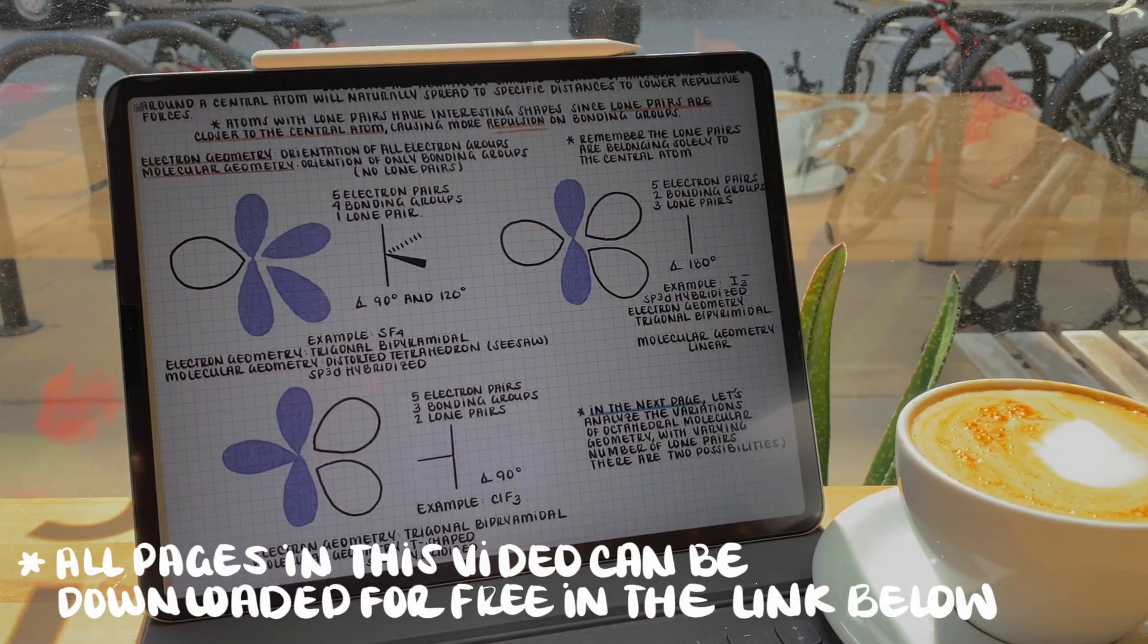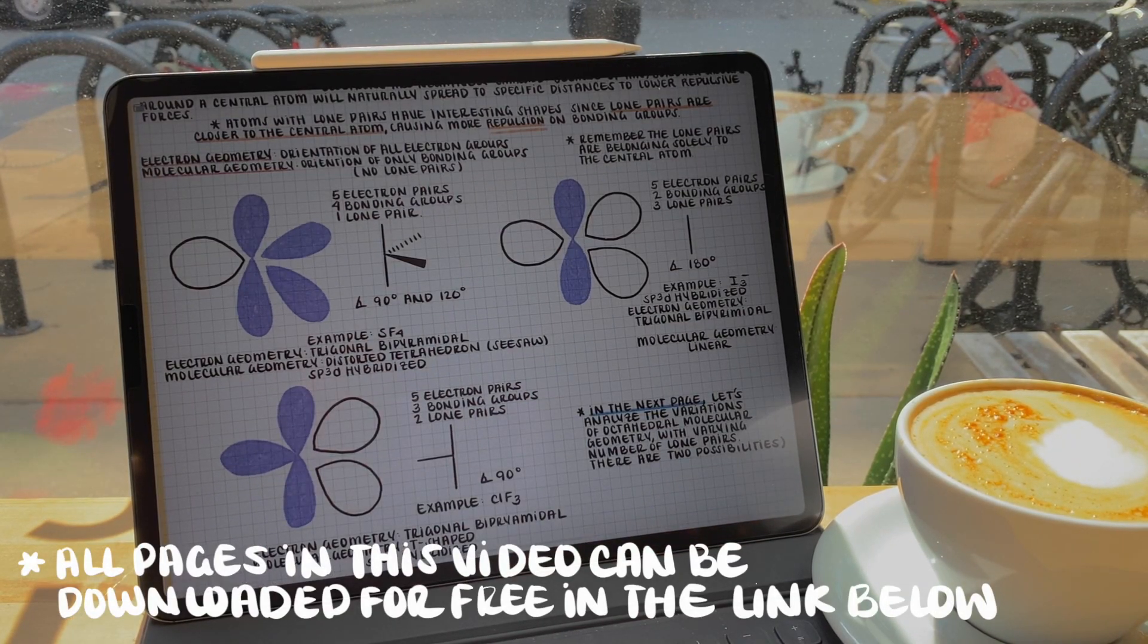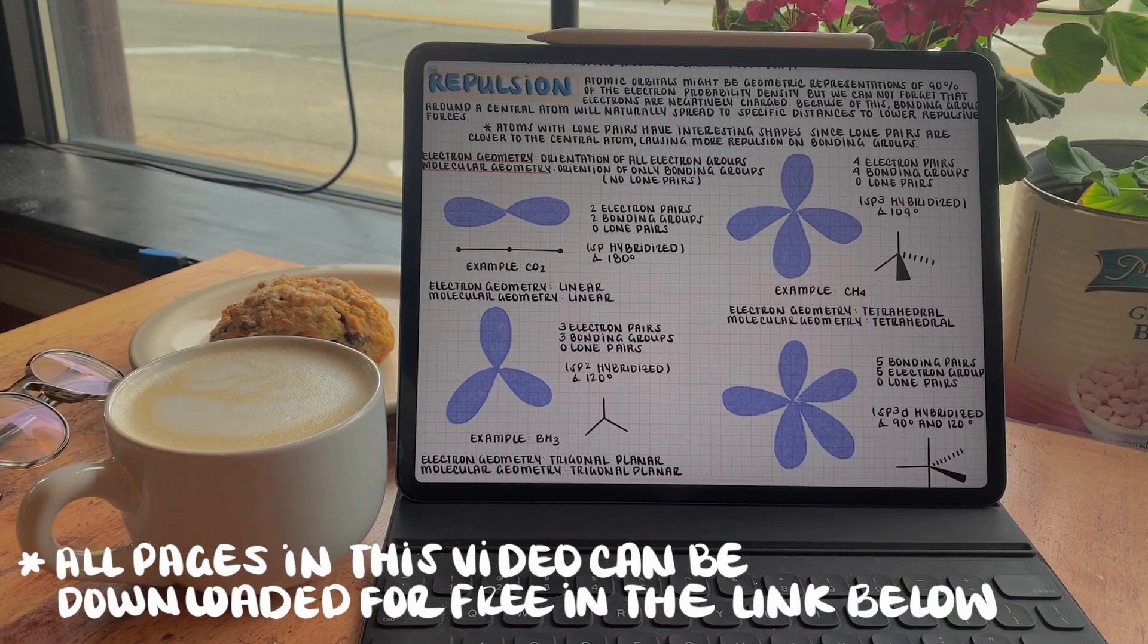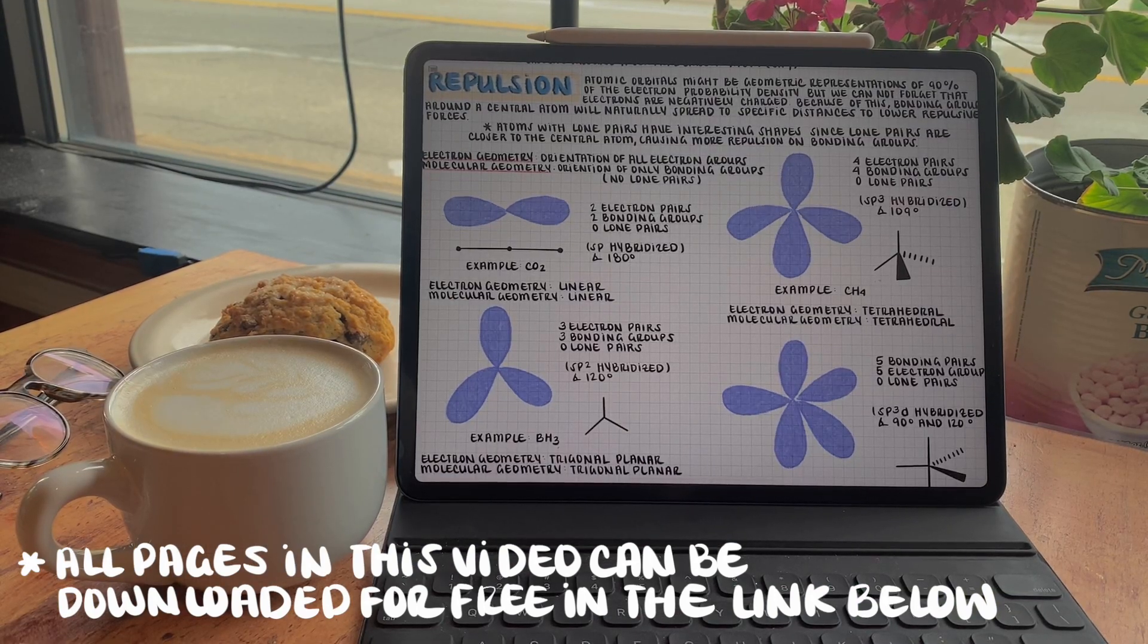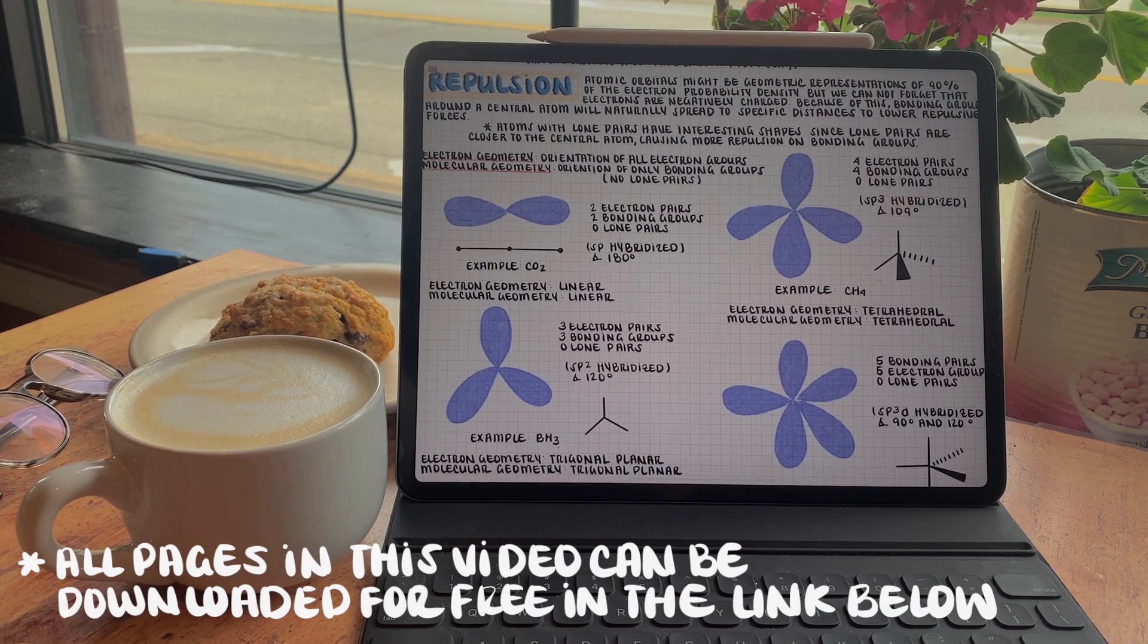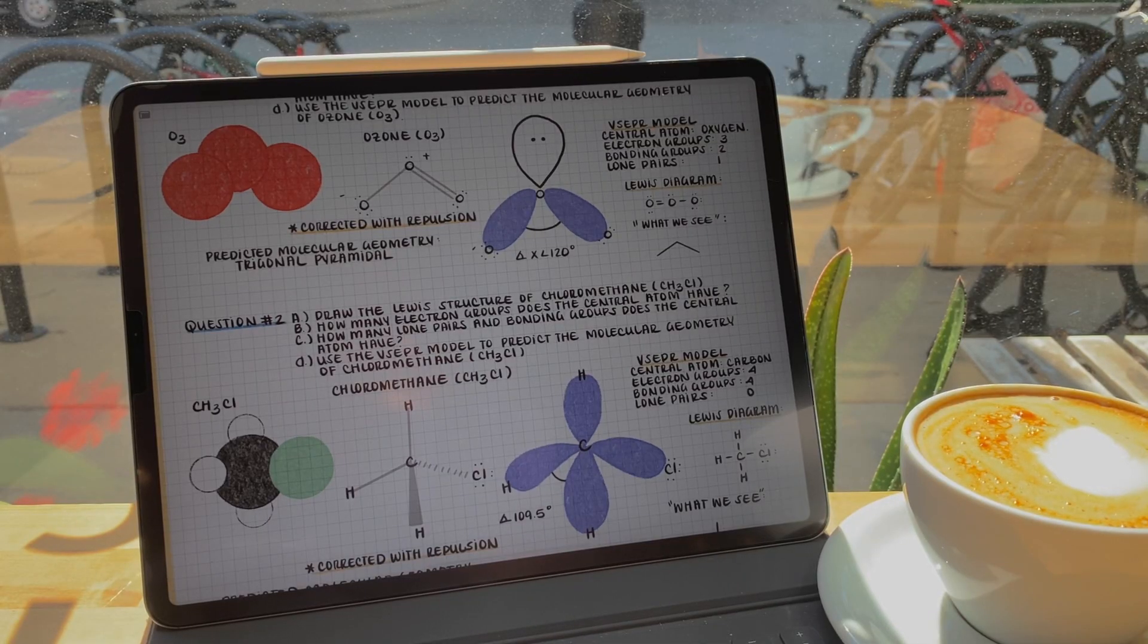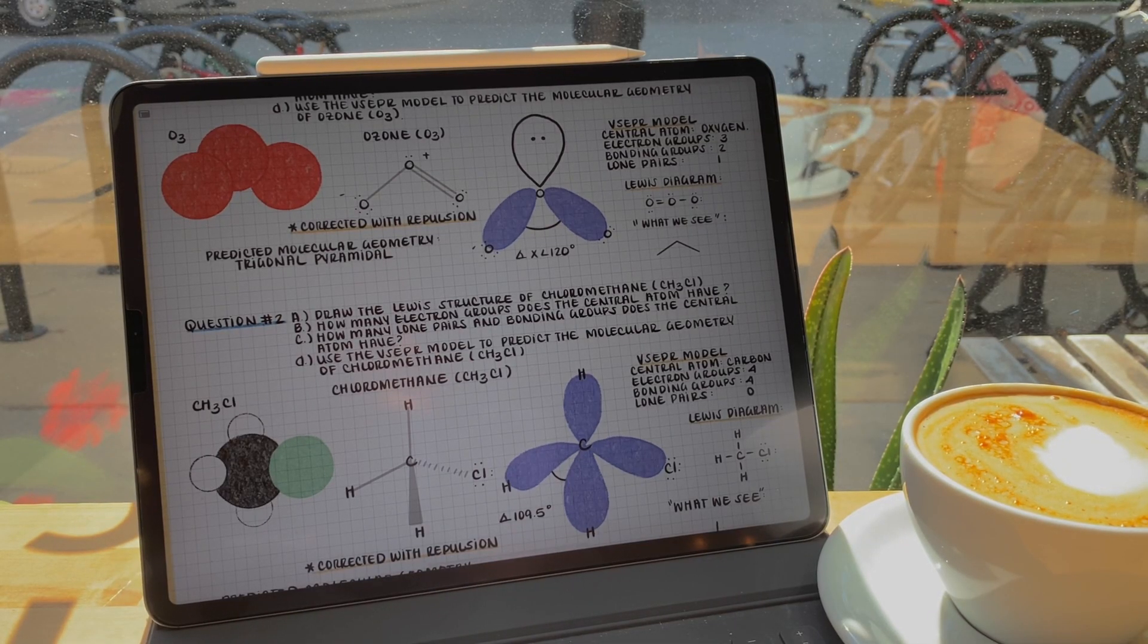Hello everyone, I hope everyone's doing good. In the last video, we took a look at valence shell electron pair repulsion models, or VSEPR, which helped us predict the molecular geometry around a central atom by minimizing the repulsion from like charges.